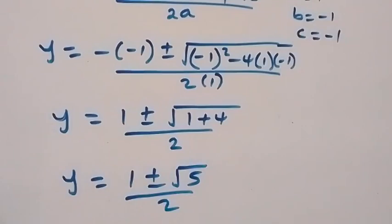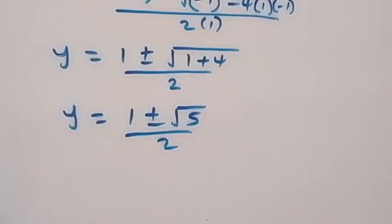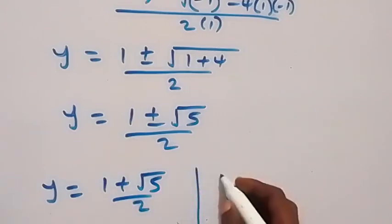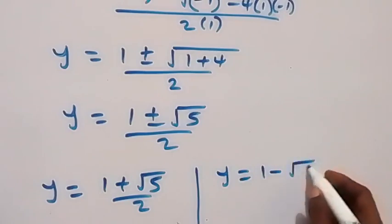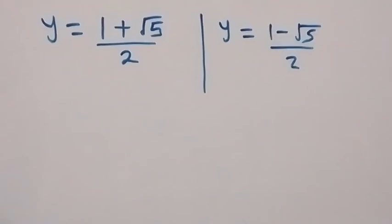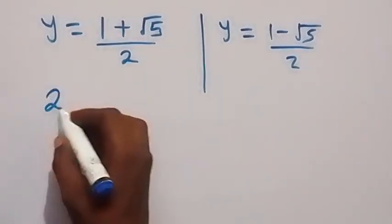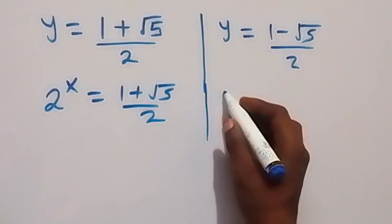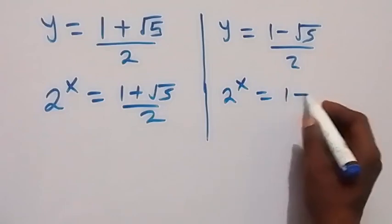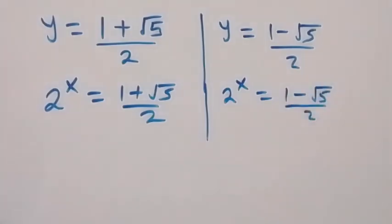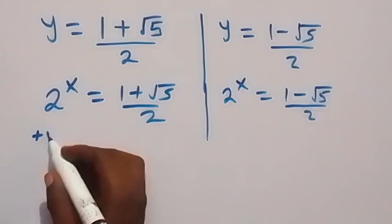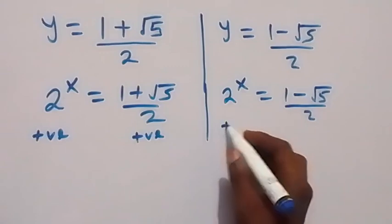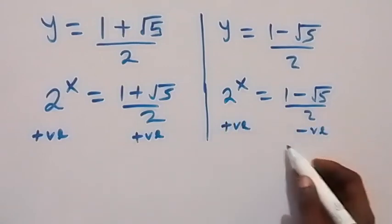We have two values for y. We have y equals to 1 plus root 5 over 2, and y equals to 1 minus root 5 over 2. The first value, 1 plus root 5 over 2, is a positive number, so it is accepted. The second value, 1 minus root 5 over 2, is negative, so this side is rejected.